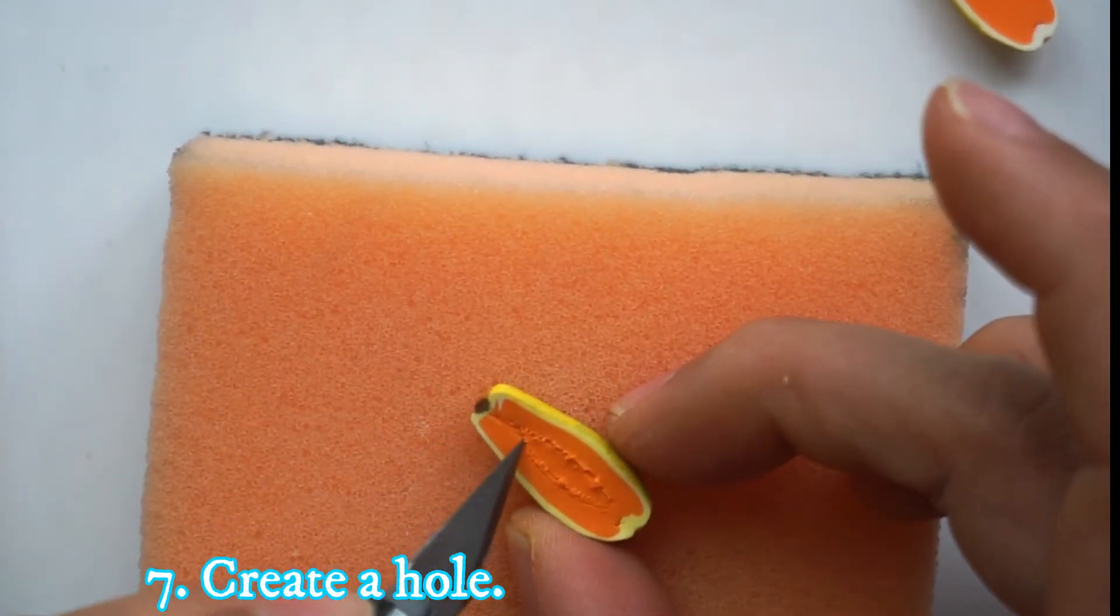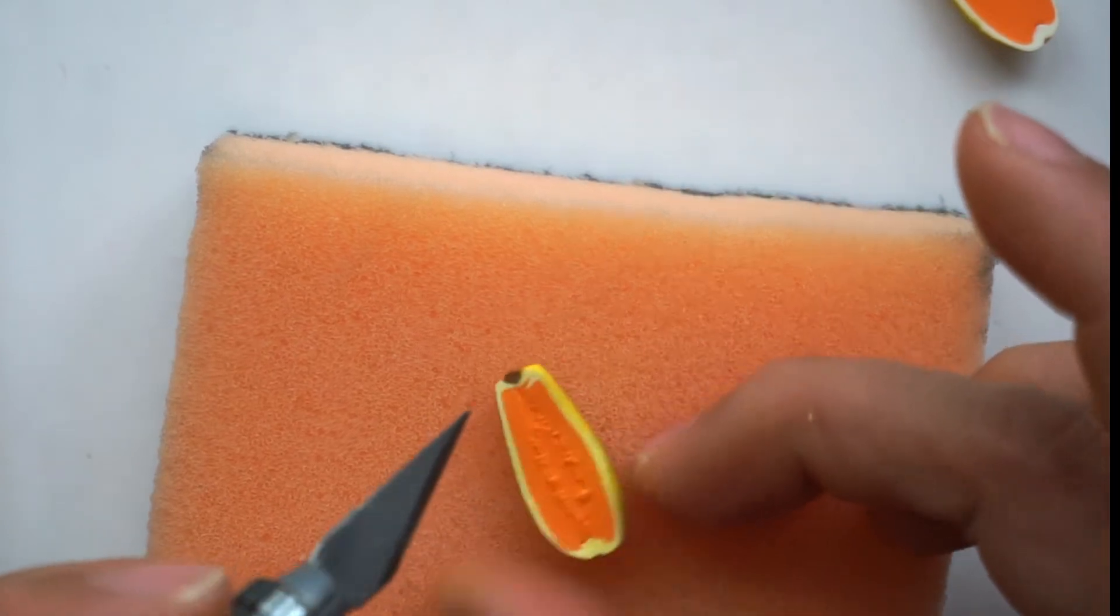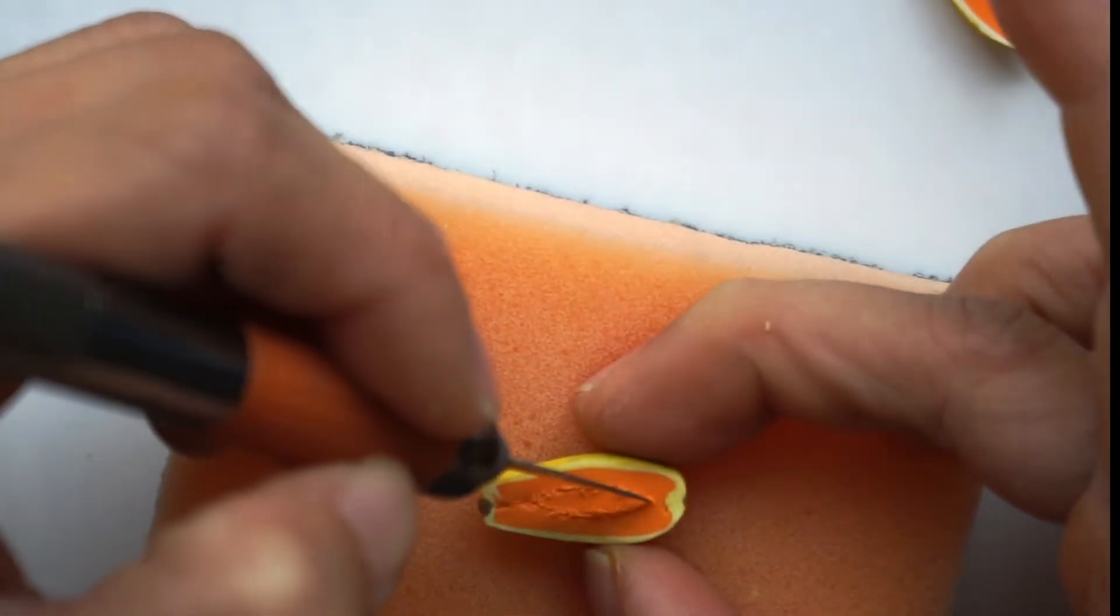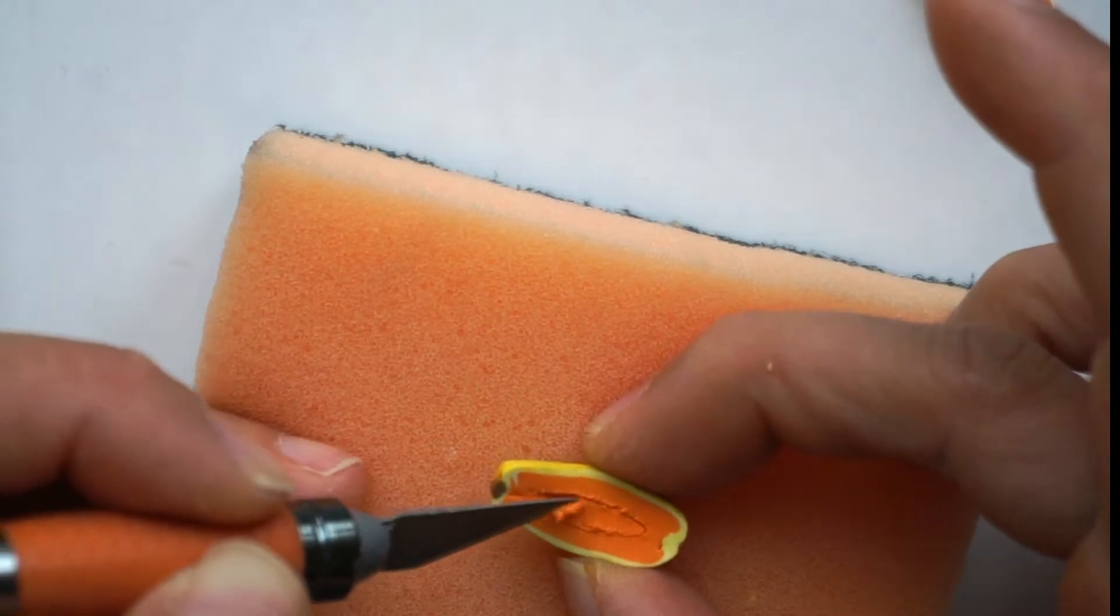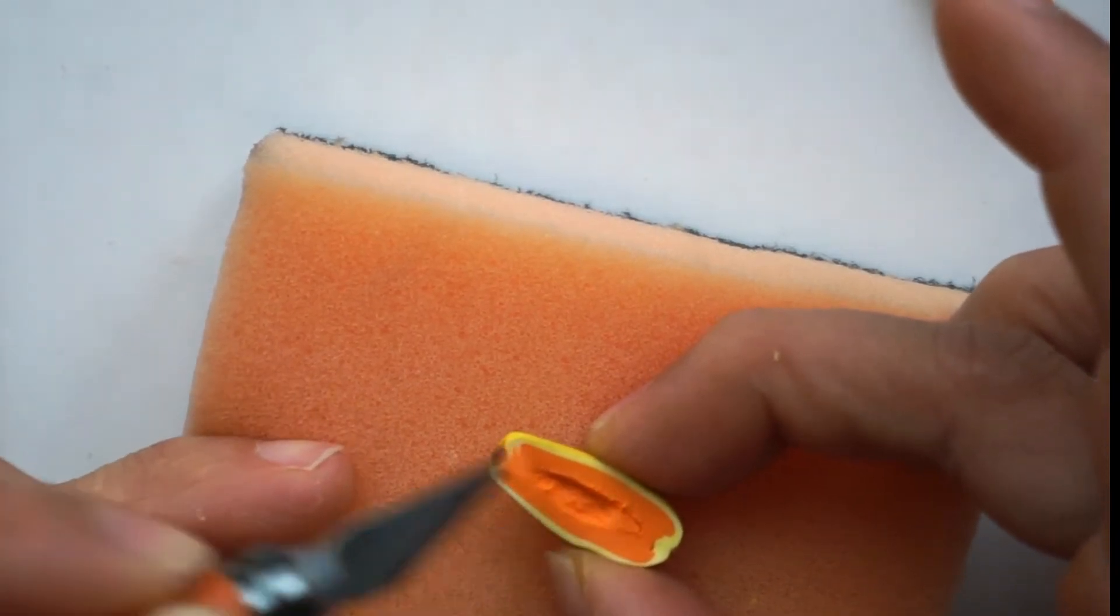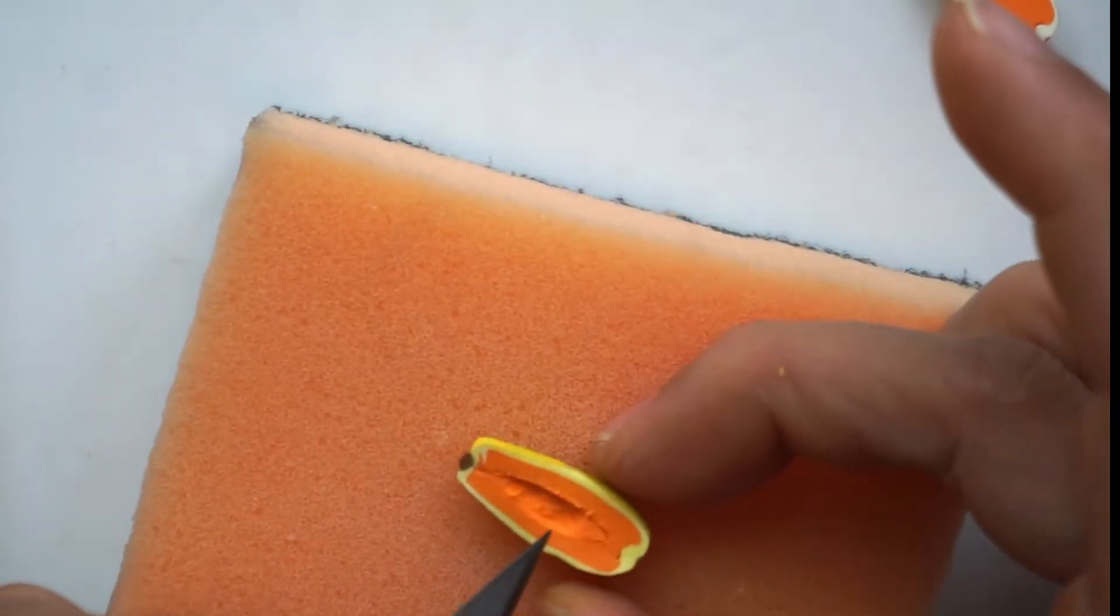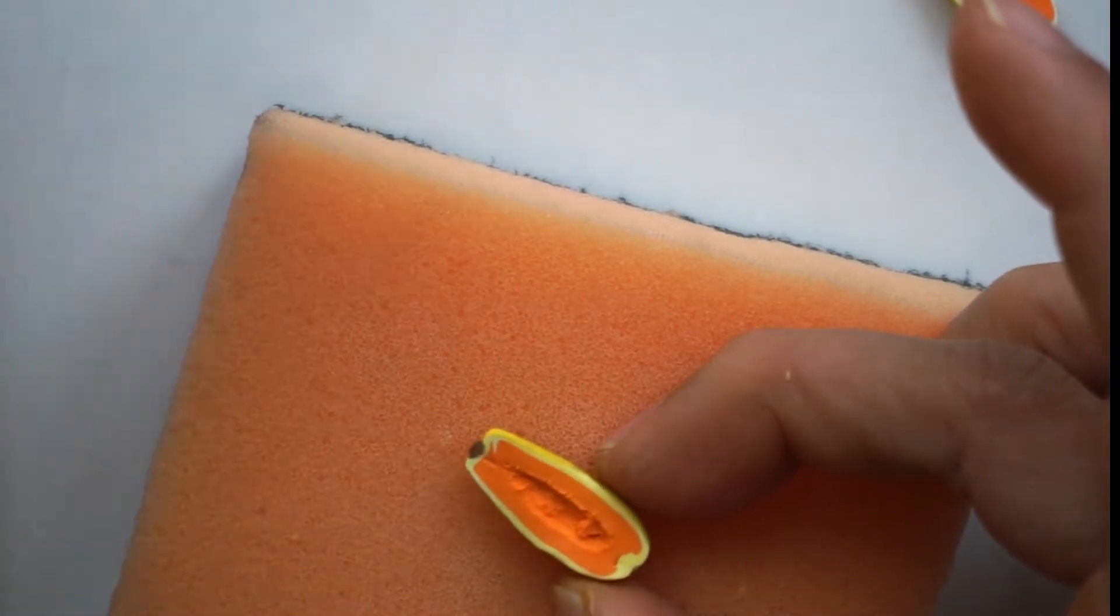Next, remove the middle part and create a hole for the seeds. And while we are here, we can also correct the uneven orange line on top of the papaya, simply by adding an orange clay. And after that, pre-bake and let it cool.